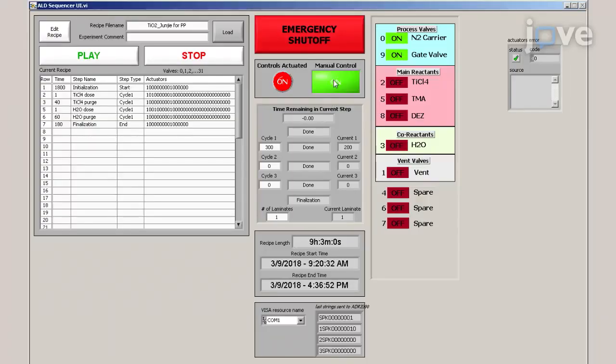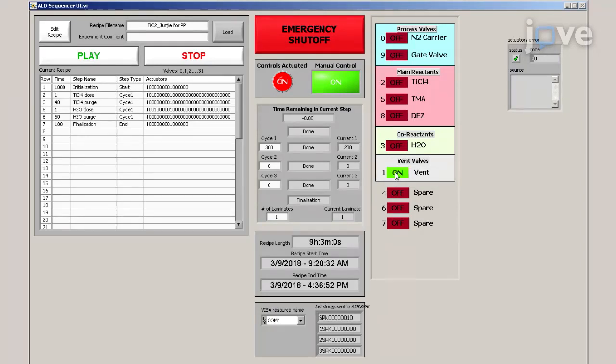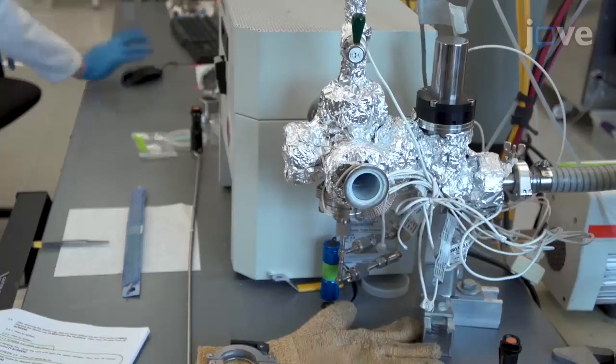Turn on manual control in the LabVIEW system. Close the carrier nitrogen and gate valve on the ALD reactor. Then open the vent nitrogen. The reactor will open and the cap will fall off.